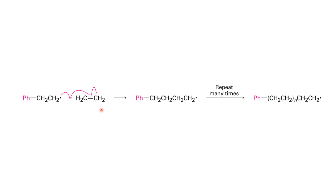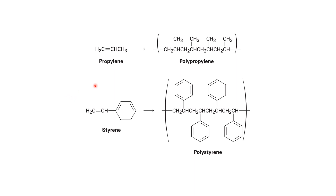This radical can react with another alkene building block, and the product again has a leaving radical. It can repeat this reaction many times and eventually form a long polymer chain. The example we used is ethylene, so in that case we call the product polyethylene. If the starting material is propylene with an extra methyl group, the product is polypropylene. If the starting material is styrene, with a phenyl group attached, the product is polystyrene. The backbone structures are exactly the same.